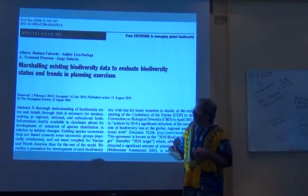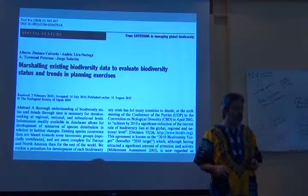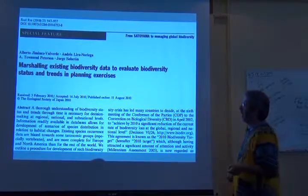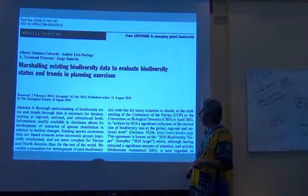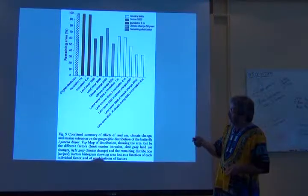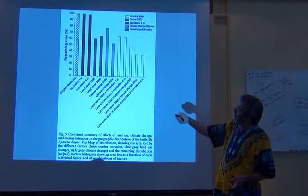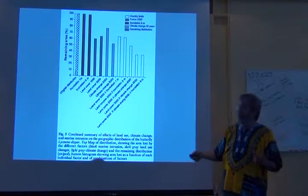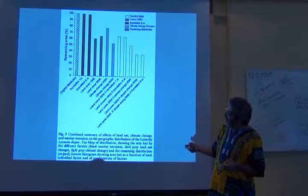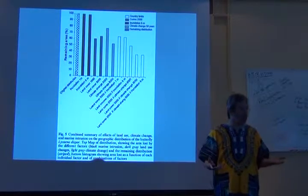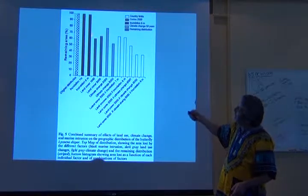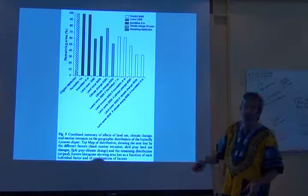This took us into a next exploration, done in Europe, bridging over with some people who do policy at the European Environmental Agency. We brought in a lot more factors. We can start with the original distribution, and then estimate how much of that original distribution would be lost to, for example, inundation by sea level rise — if you raise the sea level one meter or six meters, how much do you lose? For this particular species, almost nothing is lost.